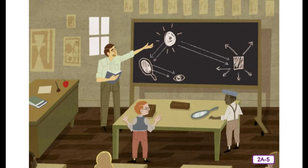Jack nodded. 'However,' Samuel continued, 'when the surface of an object is not perfectly smooth and shiny, like that of a piece of wood, light rays hit different parts of it at different angles. Therefore, some light rays are absorbed by that object, and some are reflected at different angles, so it does not produce a reflection.'